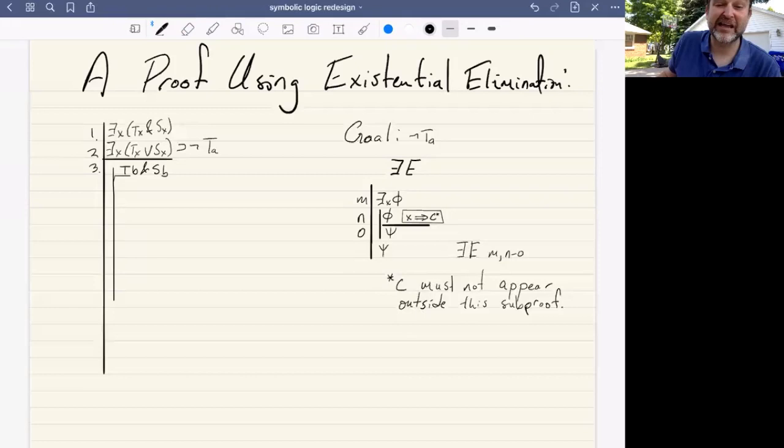Now, if B is both T and S, then at step four, we can derive that B is T via conjunction elimination of three.